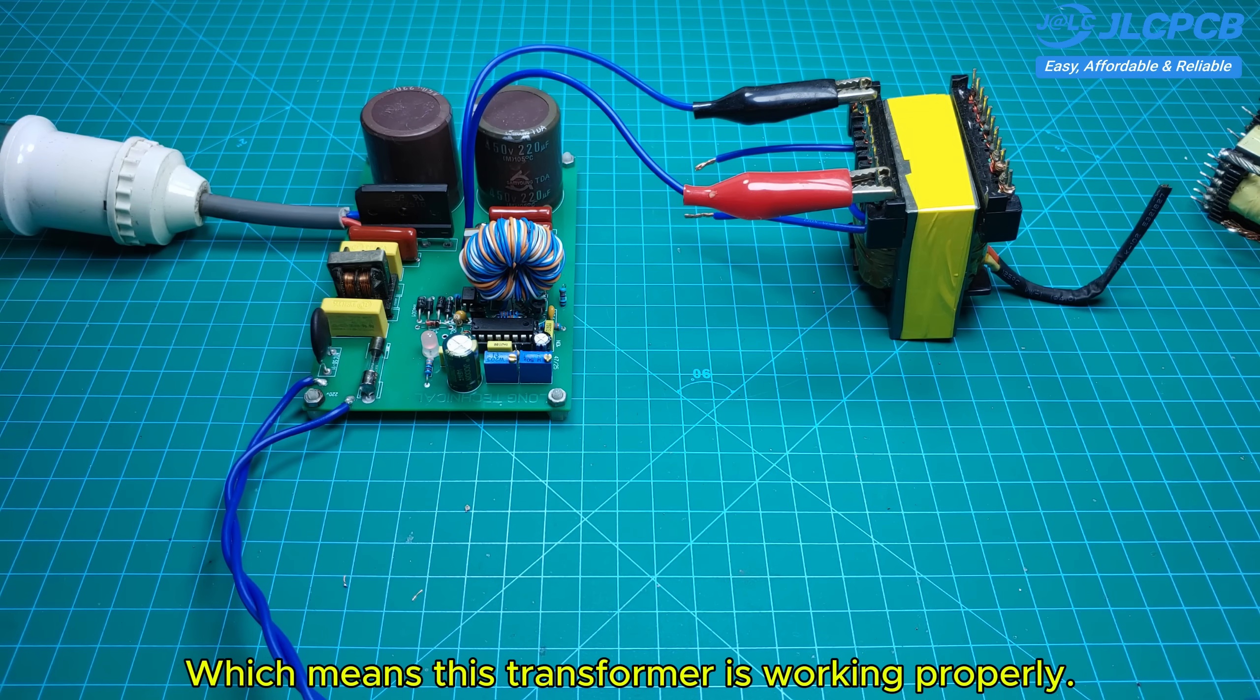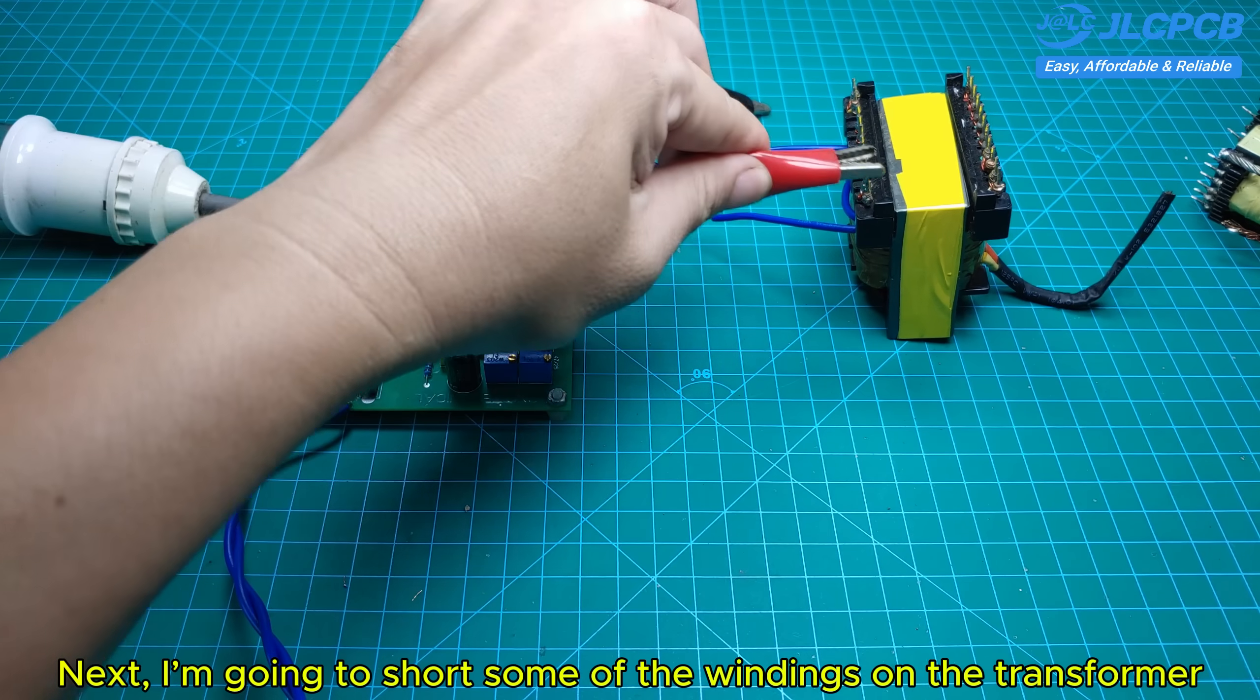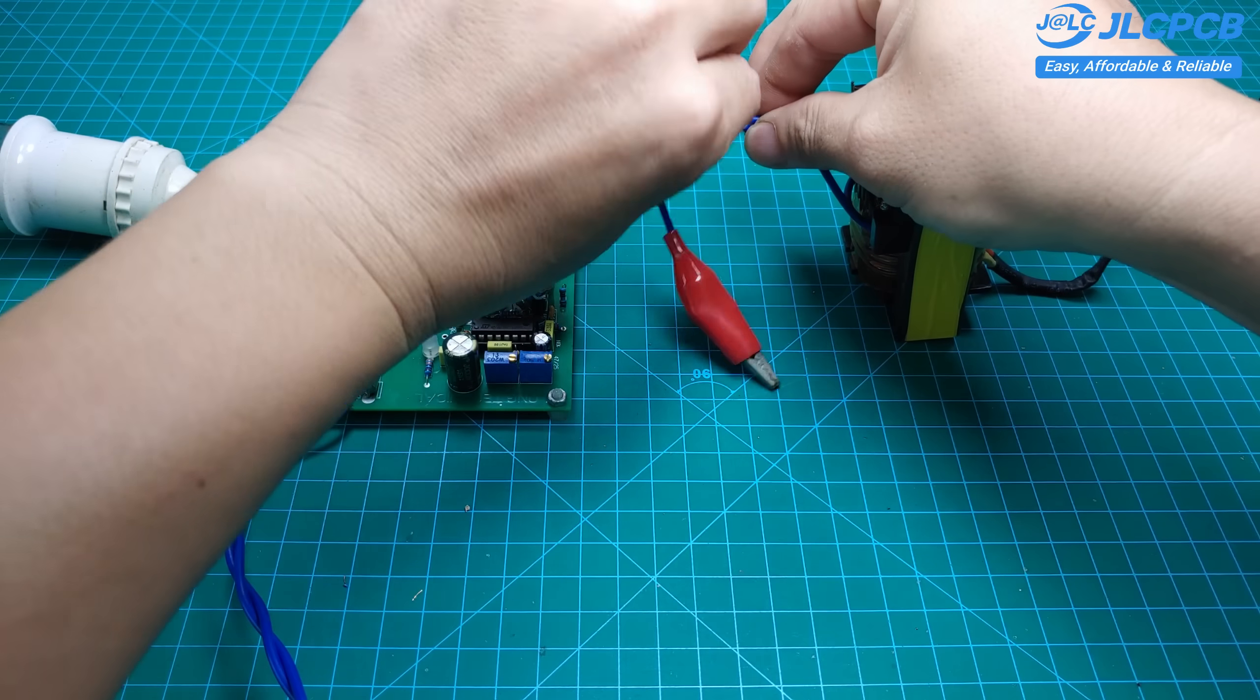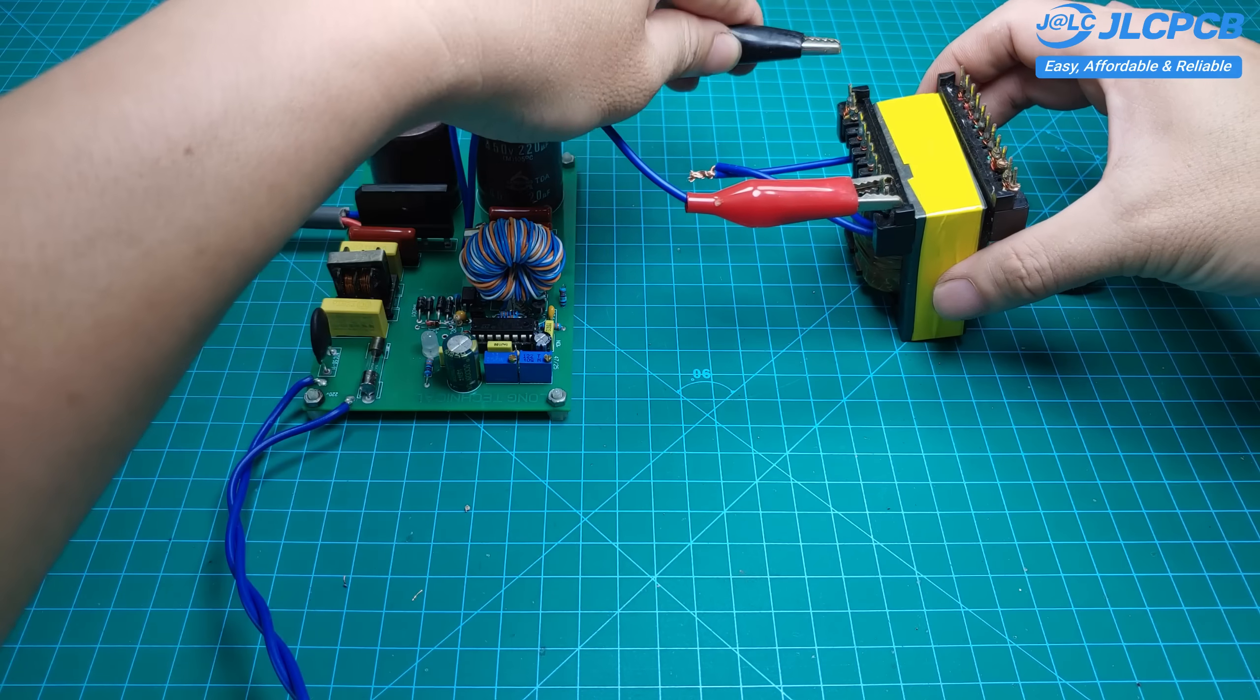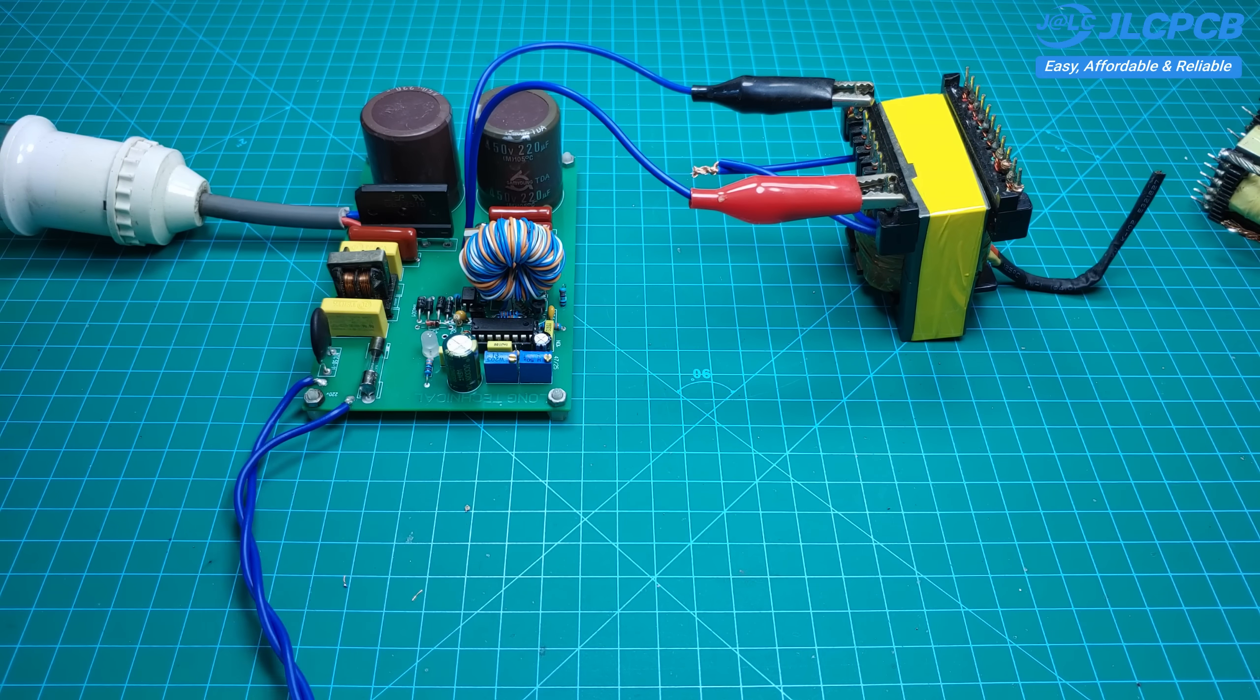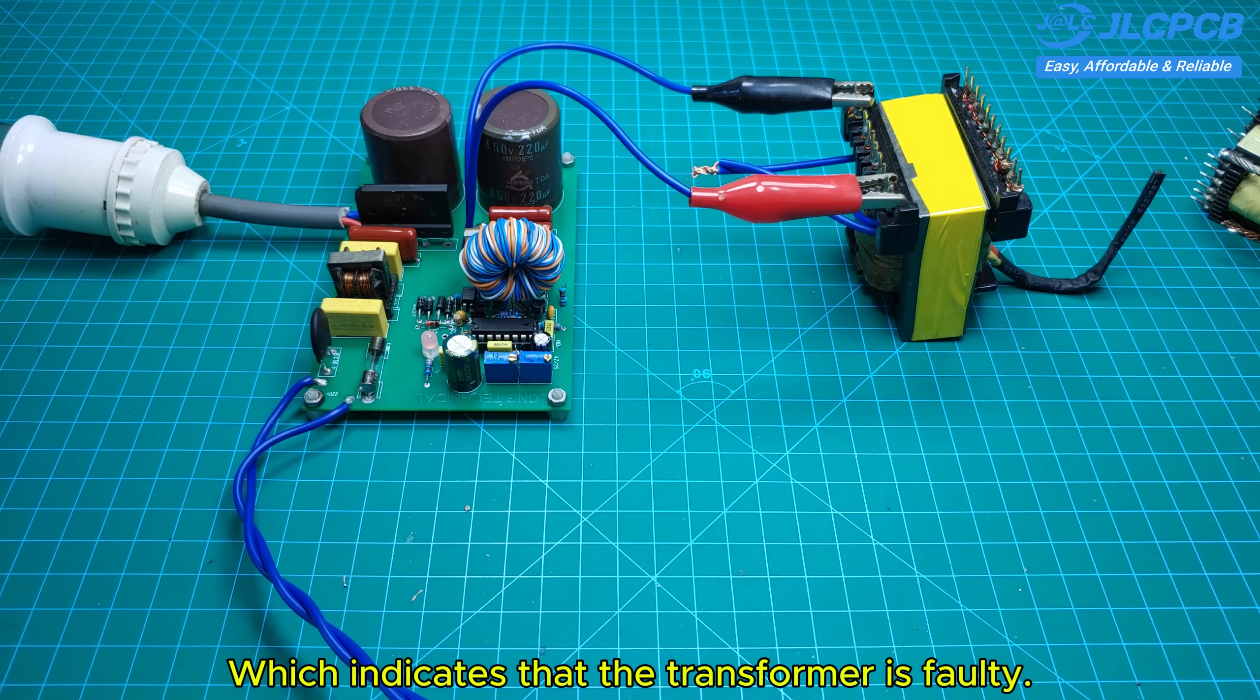which means this transformer is working properly. Next, I'm going to short some of the windings on the transformer to simulate an internal short circuit. Let's see what happens. As we can see, the LED is blinking, which indicates that the transformer is faulty.